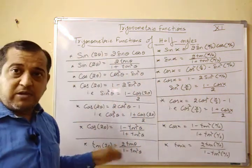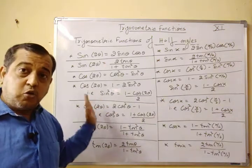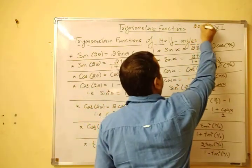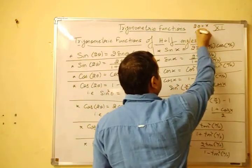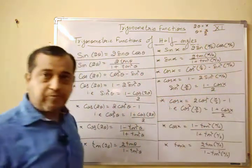So bilkul jaise aapko double angle formulas te, in the same way you are having half angle formulas. 2 theta is replaced by x, so theta is replaced by x by 2.